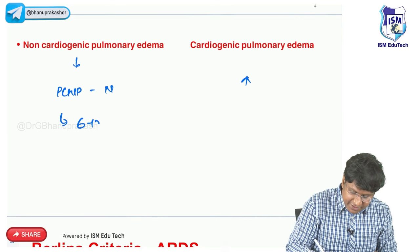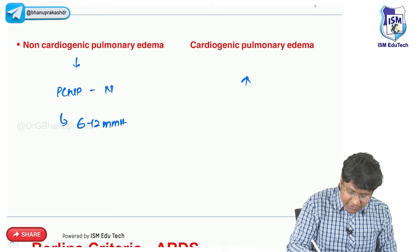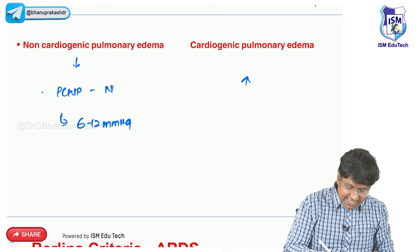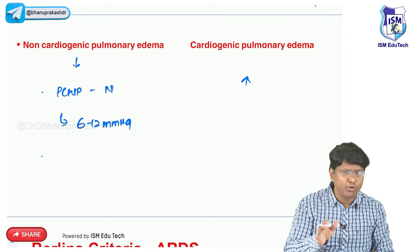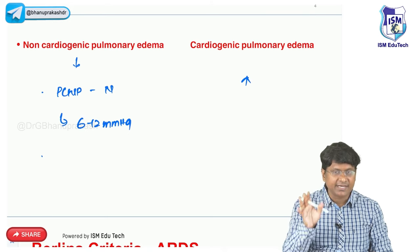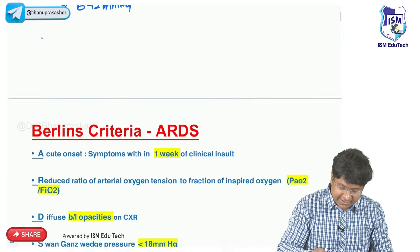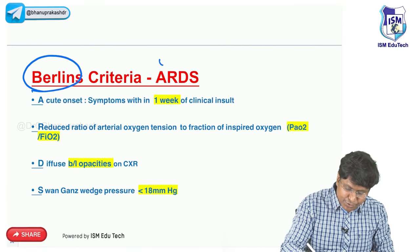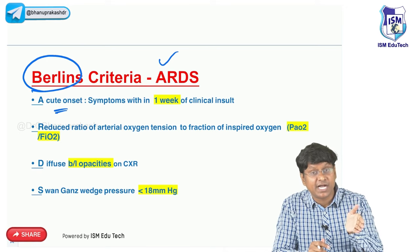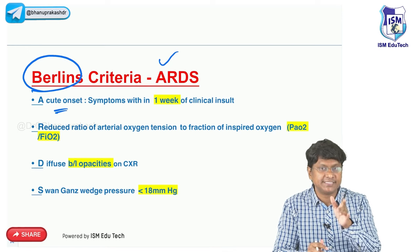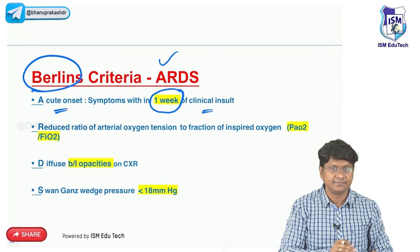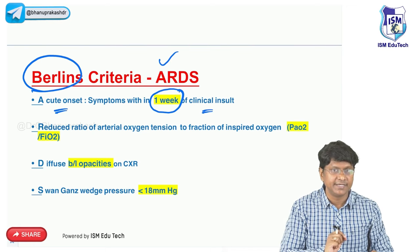The normal pulmonary capillary wedge pressure is around 6 to 12 mmHg, measured with Swan-Ganz catheter. In both types, you have fluid present within the lung. The criteria for describing ARDS is Berlin's criteria. You can remember this with the mnemonic ARDS itself. The word A stands for Acute onset - symptoms develop within one week of the clinical insult.